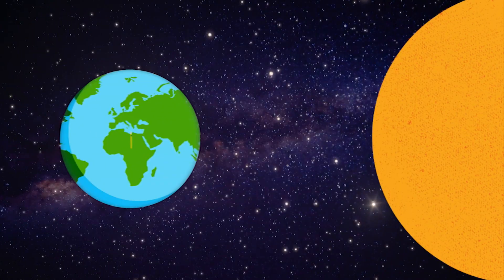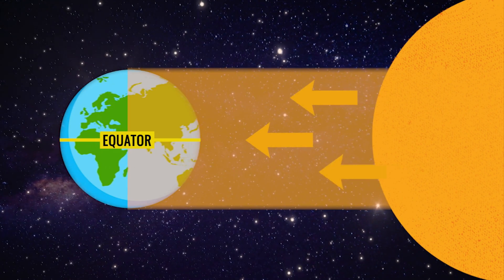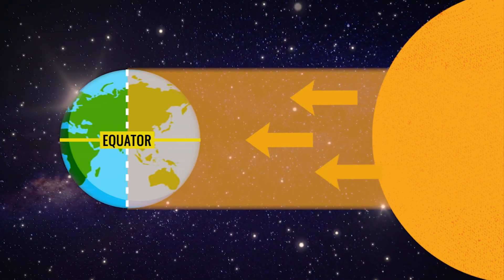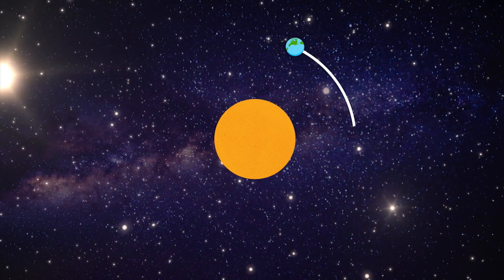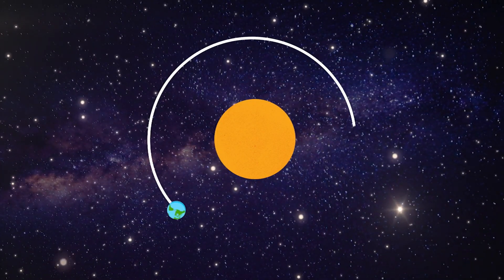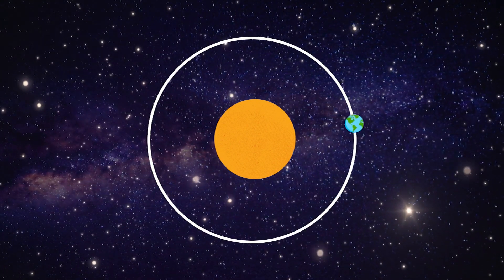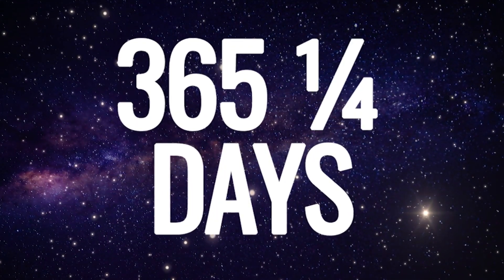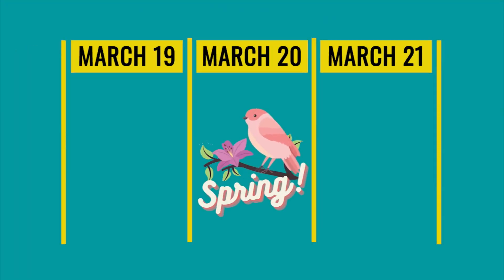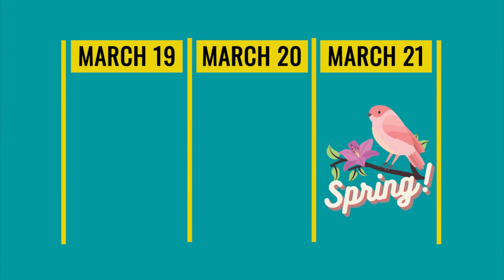Astronomical spring fully depends on Earth's relationship with the Sun. When the Sun's direct rays strike the equator at exactly 90 degrees, it marks the spring equinox, better known to us as the first day of spring. Since Earth's orbit around the Sun does not take exactly 365 days — it actually takes 365 plus one quarter of a day — astronomical spring does not always land on the same day every year.